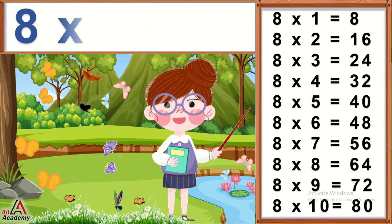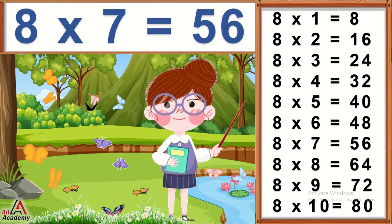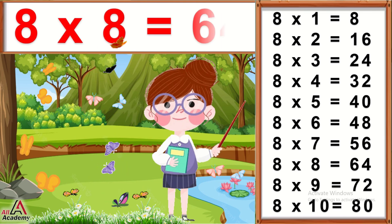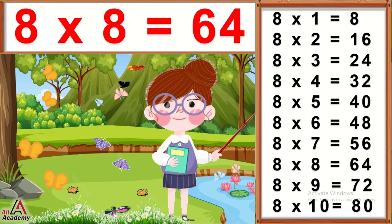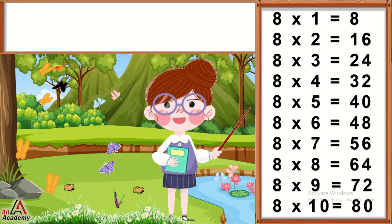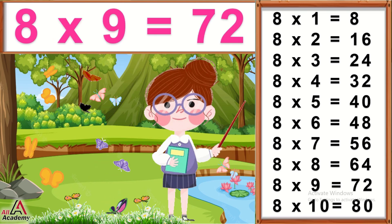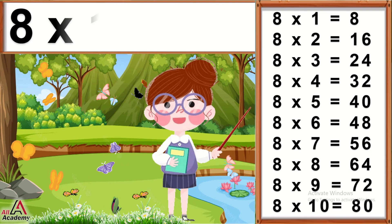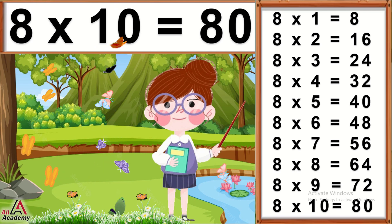8 sevens are 56. 8 eights are 64. 8 nines are 72. 8 tens are 80.